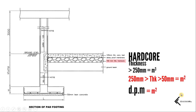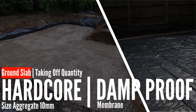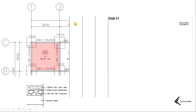Manakala untuk DPM pula adalah in unit meter square. Memandangkan kedua-dua hardcore dan juga DPM in meter square dan melibatkan keluasan yang sama, jadi dalam pengiraan kita kali ini, kita akan libatkan pengiraan hardcore dan juga damp proof membrane secara serentak — nilai yang sama dan unit yang sama. Jom kita tengok contoh pengiraan take-off quantity bagi hardcore dan juga damp proof membrane yang terlibat bagi ground floor slab S1.